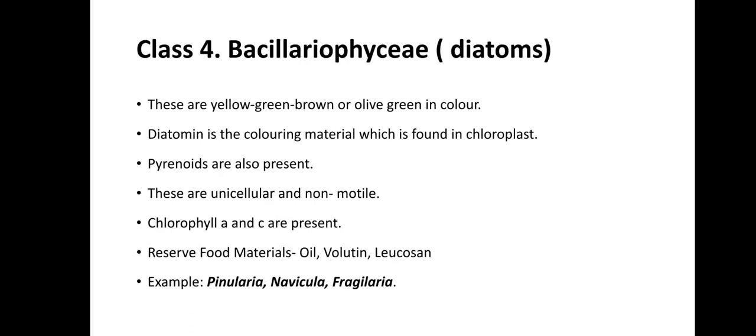Class 4 is Bacillariophyceae, commonly known as diatoms. They are mainly yellow-green, brown, or olive-green in color. Diatomin is the main coloring material present in the chloroplast of diatoms. Pyrenoids are also present. These are unicellular and non-motile. Chlorophyll A and C are present. Main reserve food materials are oil, volutin, and leucosin. For example, Pinnularia, Navicula, and Fragilaria.